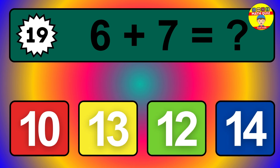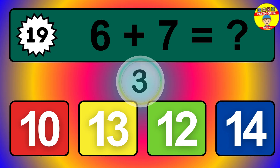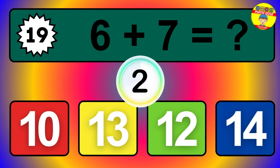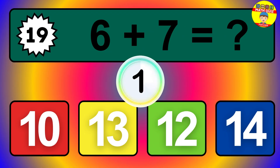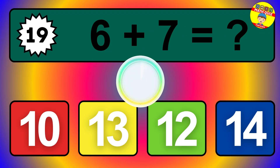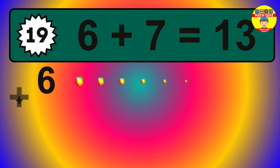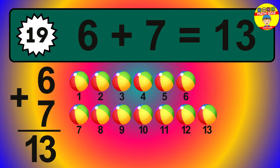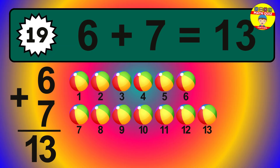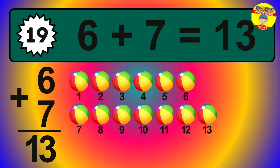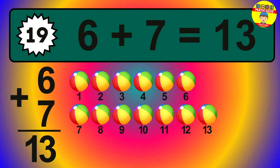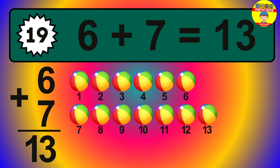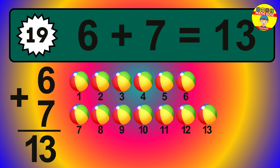Question 19. 6 plus 7 equals what? So the answer is 6 plus 7 is 13. Let's count it: 1, 2, 3, 4, 5, 6, 7, 8, 9, 10, 11, 12, 13.